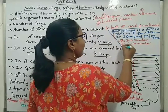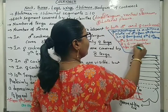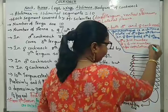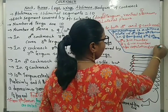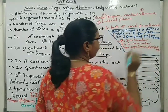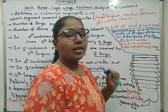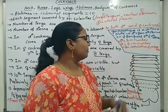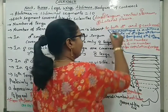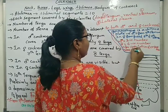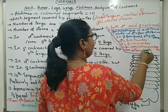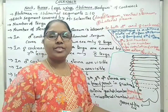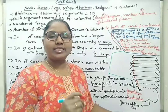The gonapophysis is used for copulation and oviposition. These are also considered as external genitalia. The opening of these genital structures is called the genital aperture.